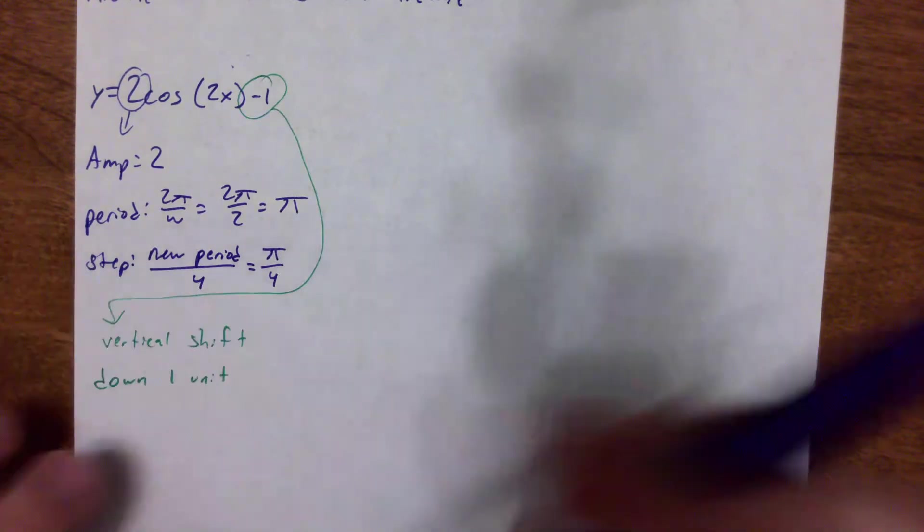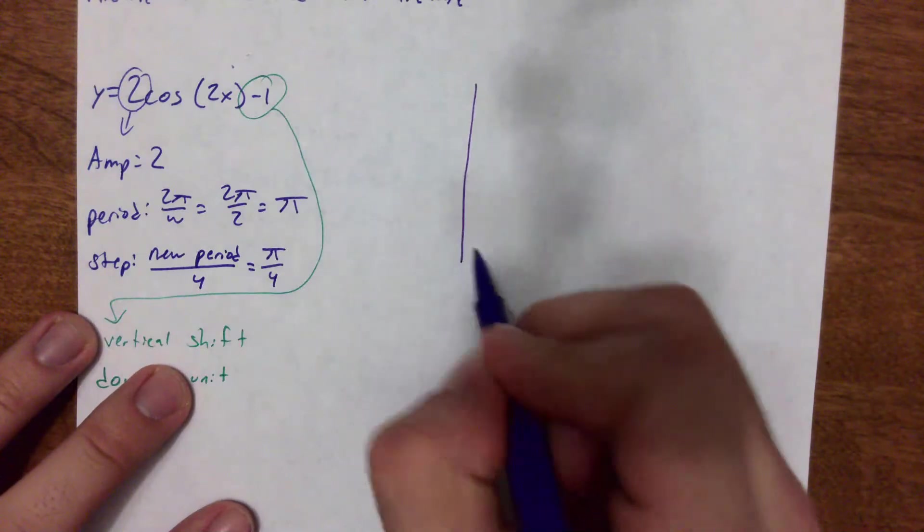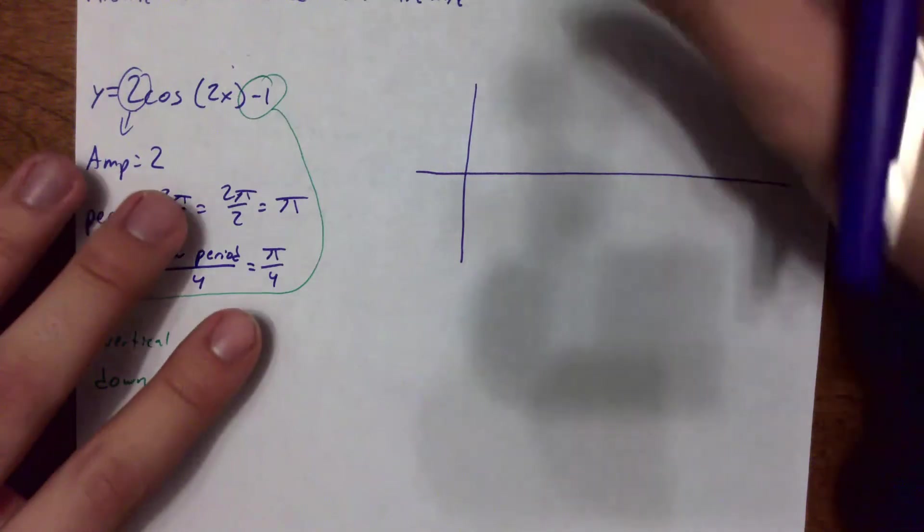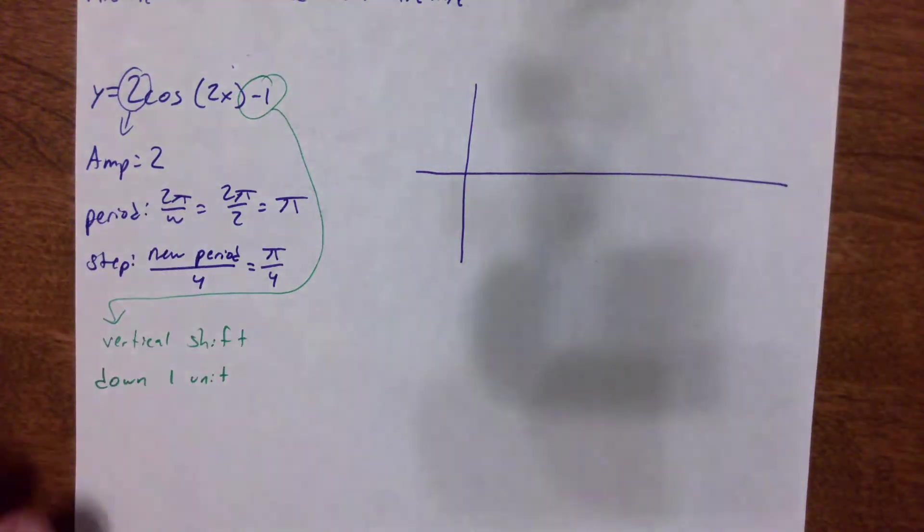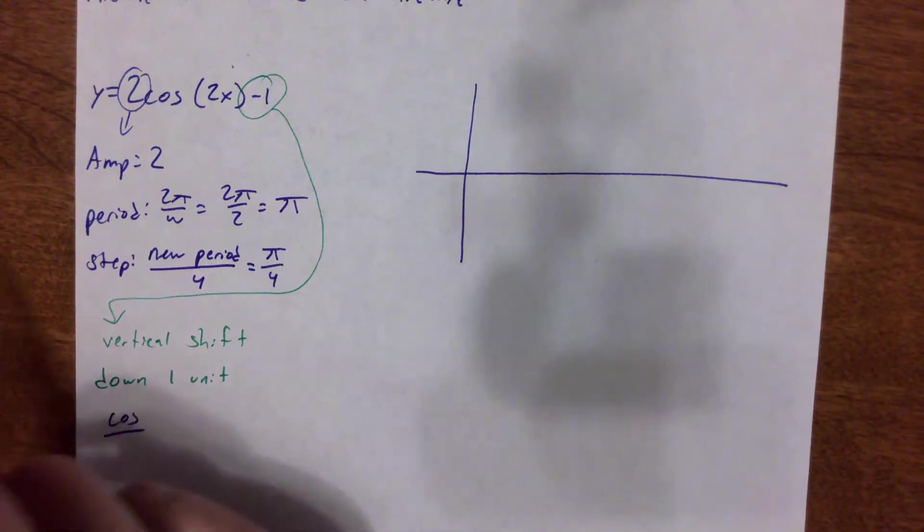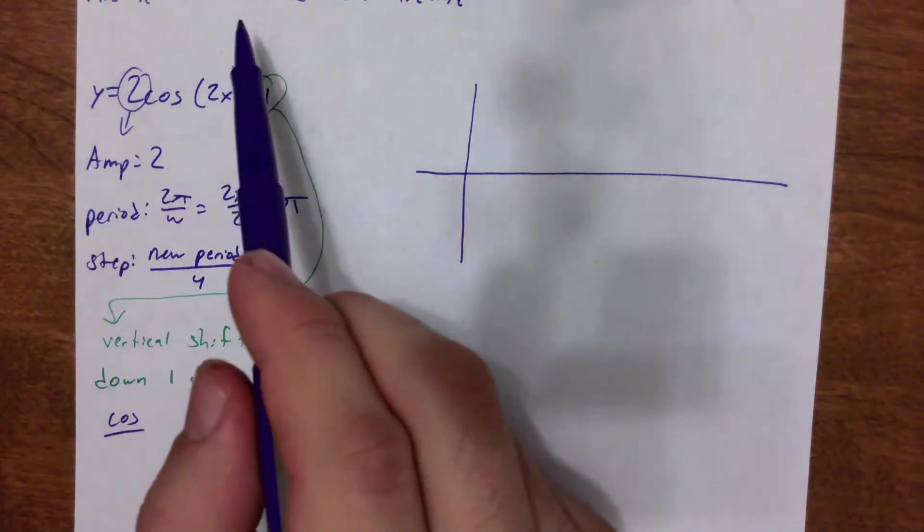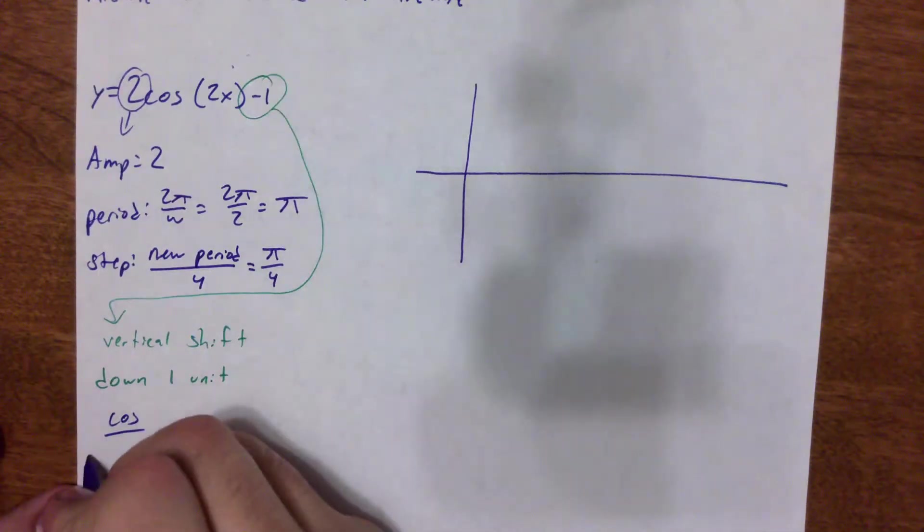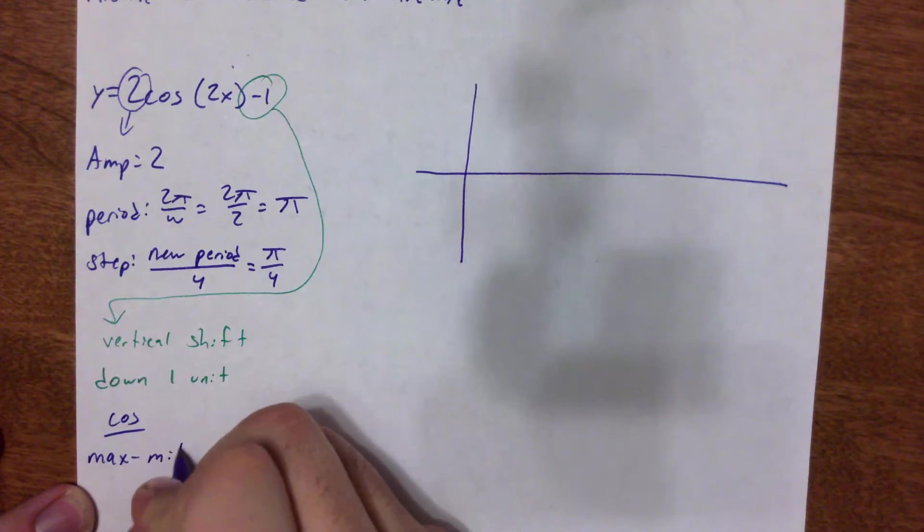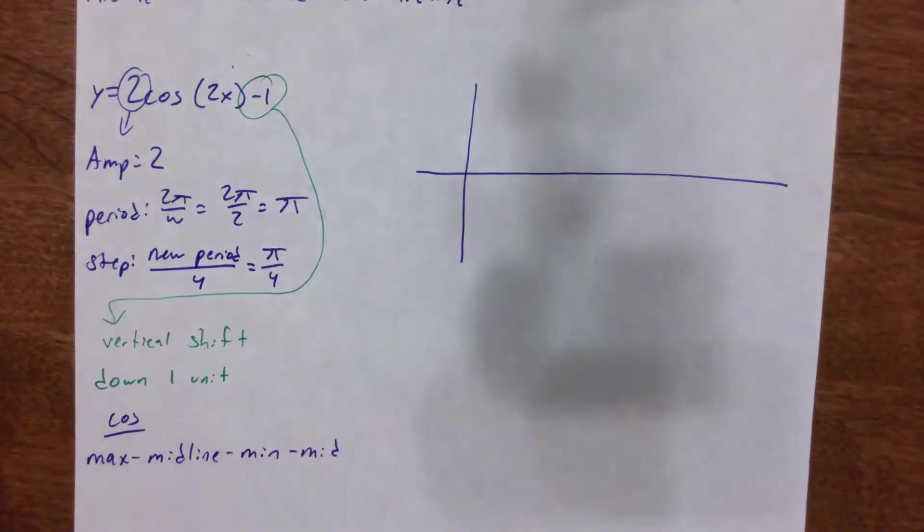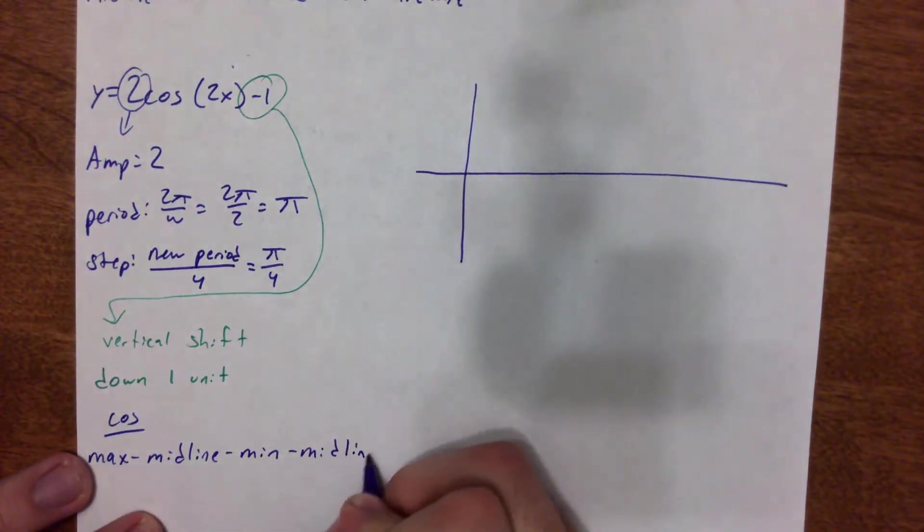So let's start graphing. We're actually going to graph two periods of this one. Oh, I have one more thing to say, actually. Cosine. So in the last video we saw sine was midline, max, midline, min, midline. Cosine goes maximum, midline, minimum, midline, max.